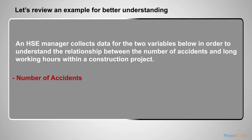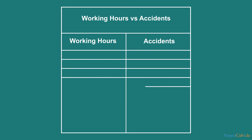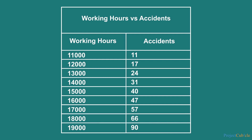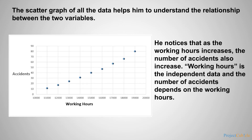The two variables collected are: number of accidents and working hours. He then plots the data in a scatter plot by assigning working hours to the horizontal axis and the number of accidents to the vertical axis. The scatter graph helps him understand the relationship between the two variables. He notices that as working hours increase, the number of accidents also increases. Working hours is the independent variable and the number of accidents depends on the working hours.